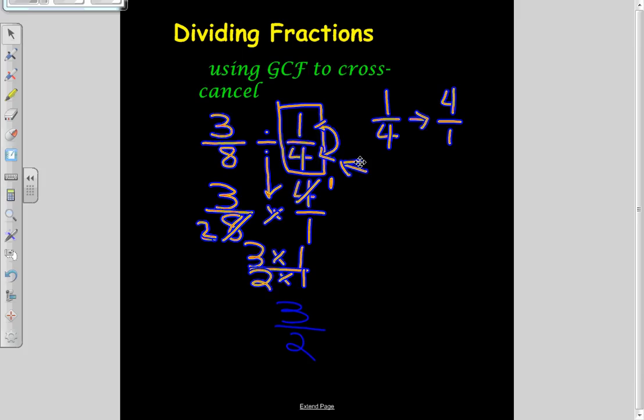Now, 3 halves is not my final answer. This is not in simplest form. So I'm going to have to convert the improper fraction to a mixed number. 3 halves is the same as 2 halves plus 1 half. And we know that 2 halves is actually equal to 1. So we have 1 and 1 half as our final answer.